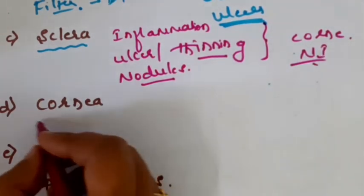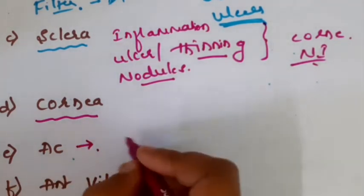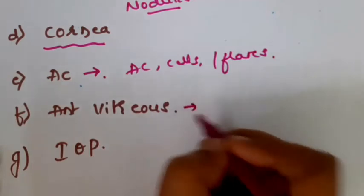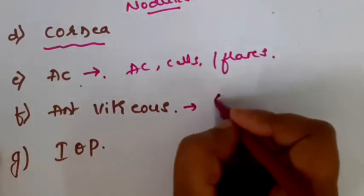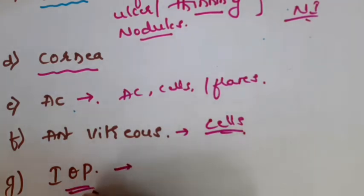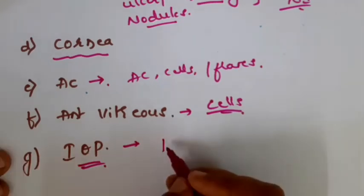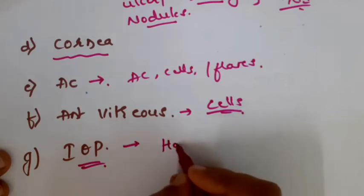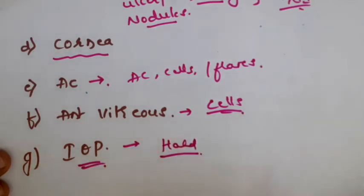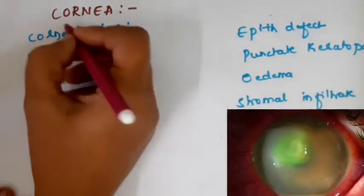In the anterior chamber, carefully look for AC cells and flare. In the anterior vitreous, examine for cells, which indicates the infection has progressed beyond the corneal limits. Don't forget to check intraocular pressure, at least digitally through the lower eyelid - palpate the globe and look for firmness. If it is hard, you have to treat with anti-glaucoma medications along with the treatment of the corneal ulcer.